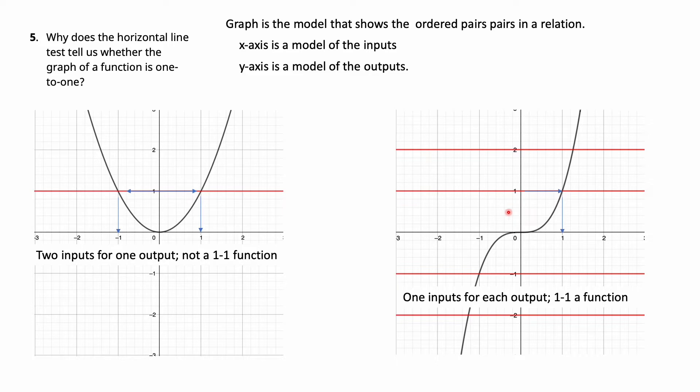Notice here for this function, every output goes to exactly one input no matter where it is. So notice what the horizontal line test is doing in each one of them is it tells you how many outputs. If it only hits it once, there's one output, one-to-one. If it hits it in more than one spot, it's not one-to-one.